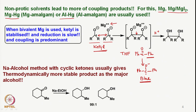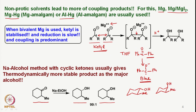Sodium and alcohol reduction with cyclic ketones is also very interesting. If you have a cyclic ketone like 2-methylcyclohexanone and react it with sodium and ethanol, there are two possibilities: a trans product and a cis product. The trans product is formed in 99% yield and the cis product in 1%. The trans product has the hydroxy group oriented such that the methyl goes up — this is the more thermodynamically stable product.